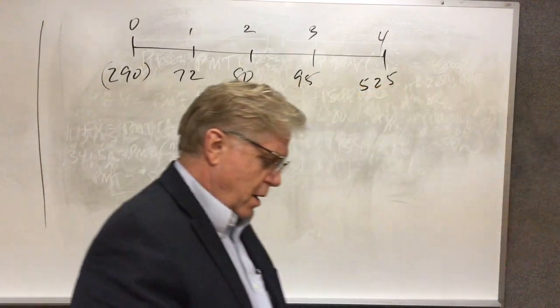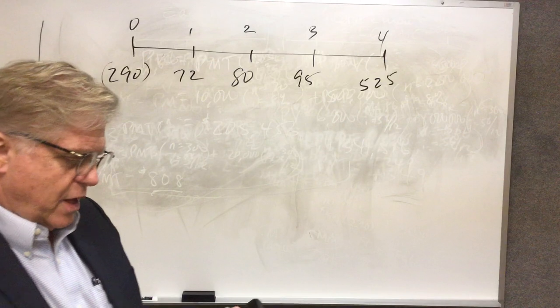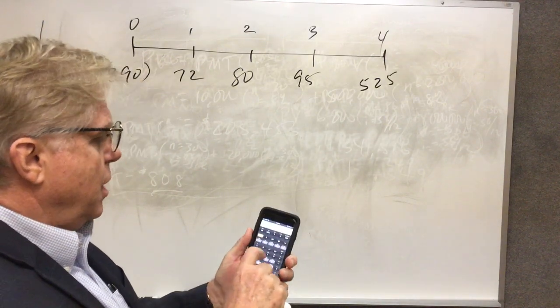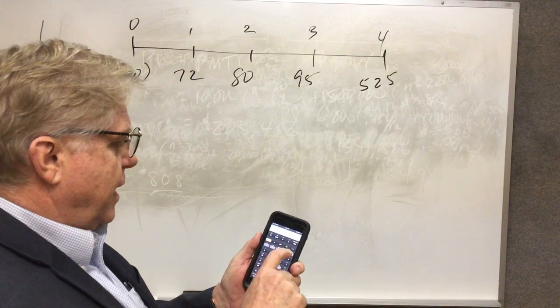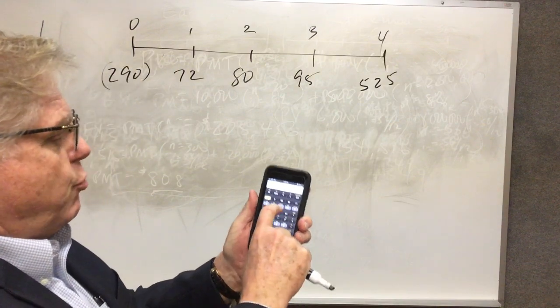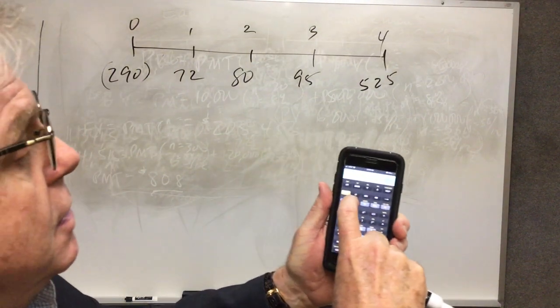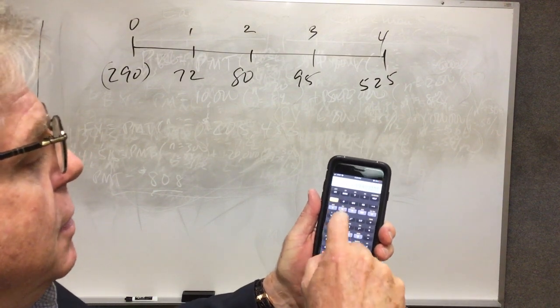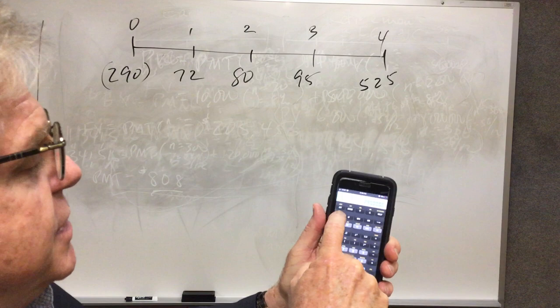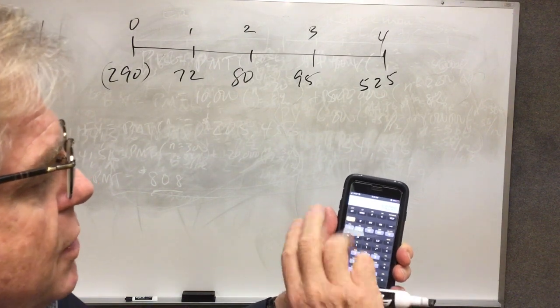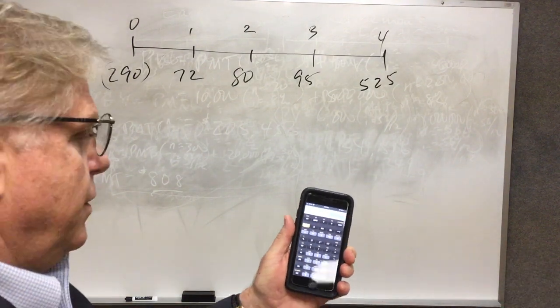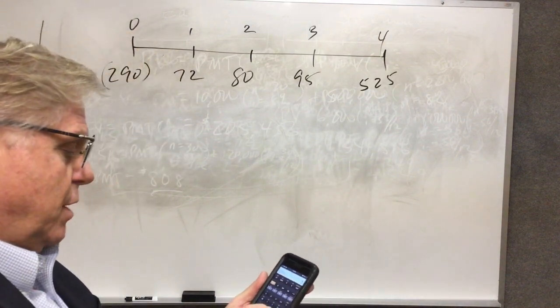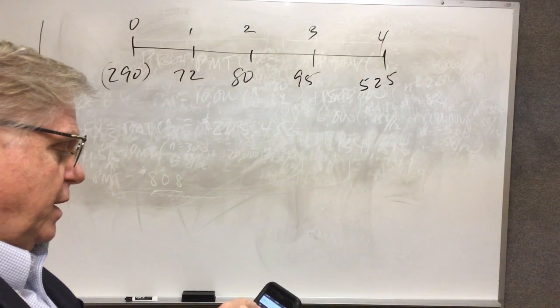So those are your amounts and the timing. Now we have this great thing in the calculator, the cash flow worksheet. You should have a handout on that that walks you through the calculation. In order to access that cash flow worksheet, you simply press the CF key, and I'm going to clear it out: second, clear work. That's how to eliminate any information that's in there.